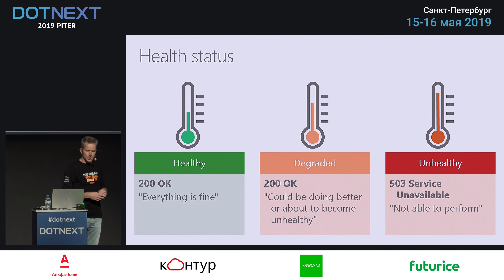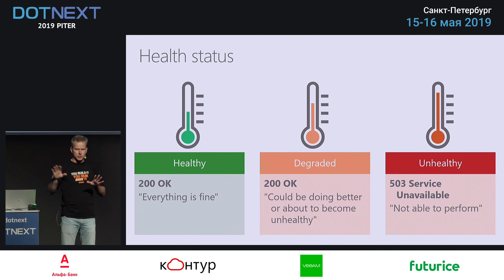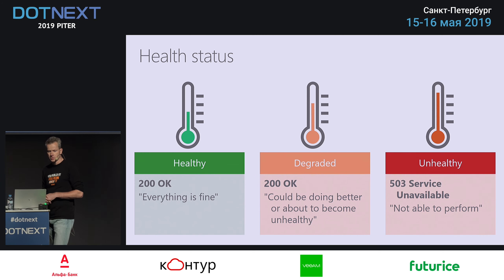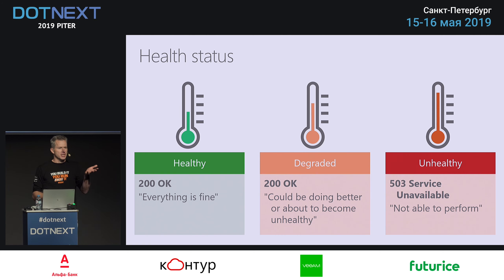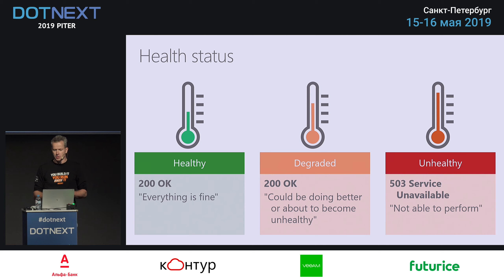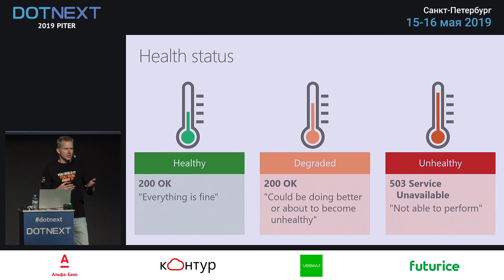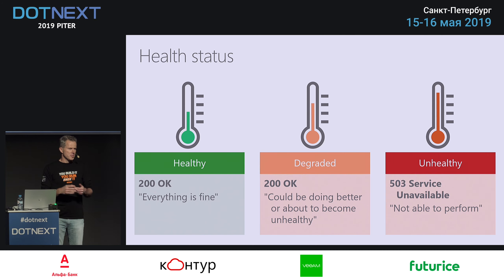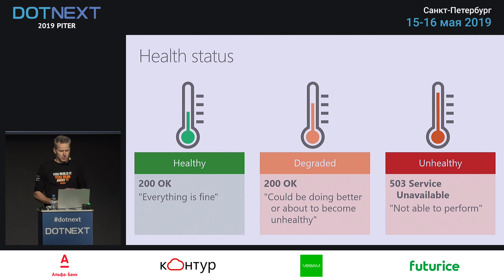You might expect there are two obvious states: healthy or unhealthy. Usually a 200 OK code indicates everything is fine, and unhealthy maps to a 503 Service Unavailable. But there's something in between — the degraded state. That means 'I'm not doing as well as I could, I can be better and maybe I need to recycle.'